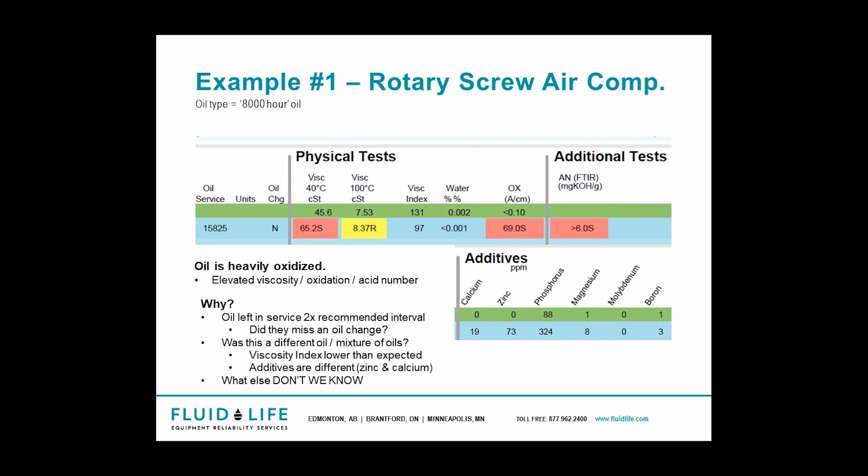It could be that an oil change was missed and we have 16,000 hours. But why was the oil change missed? Could it be the equipment couldn't be shut down at production? Perhaps it was missed on the schedule, or simply perhaps there were weather issues. Solutions include maintaining regular maintenance intervals and making sure that everything is tracked to ensure nothing is missed when it comes to oil changes.